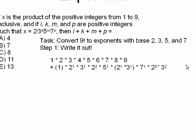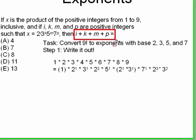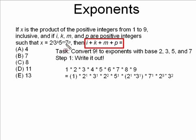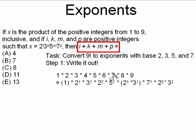Your next step is just to add up all the exponents. You could add up all the ones with base 2, add up all the ones with base 3, and so on. But the question is asking what is i plus k plus n plus p — basically, what is the sum of all the exponents. We only used base 2, 3, 5, and 7, so all we have to do is add up all the exponents.